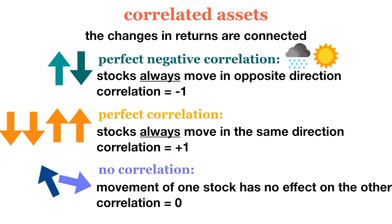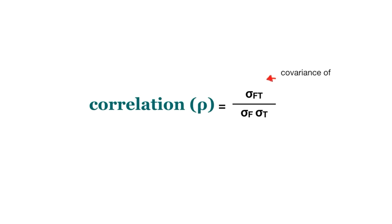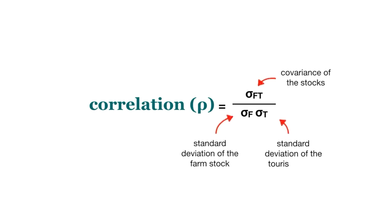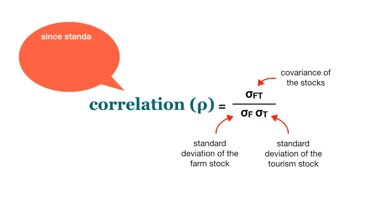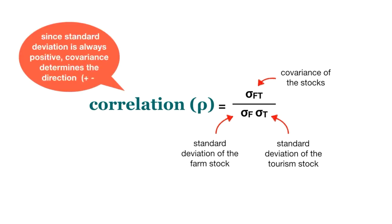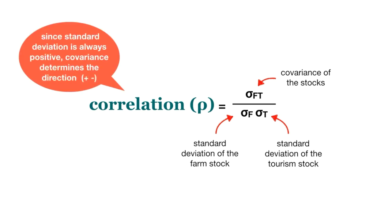When it comes to correlation, the lower the better. The correlation of the two stocks is the covariance of the stocks divided by the standard deviation of the farm stock times the standard deviation of the tourism stock. Since standard deviation is always positive, the direction of correlation — positive, zero, or negative — is determined by the covariance. But how do we calculate covariance?